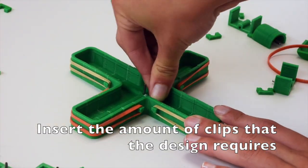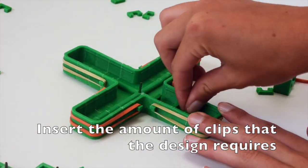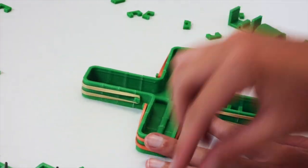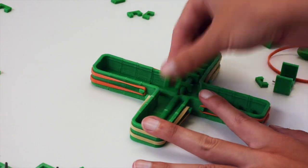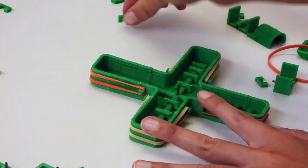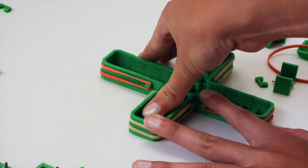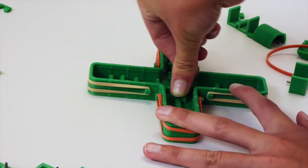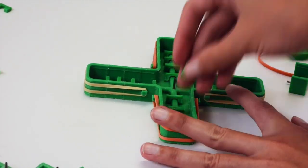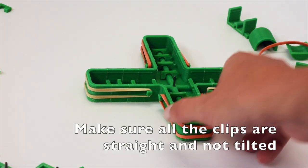After assembling the mold, insert the amount of clips that your design requires. Be sure that all of your clips are straight up and tight on the trunk. If not, they may tip over and cause large chambers of air that lead to ruptures.